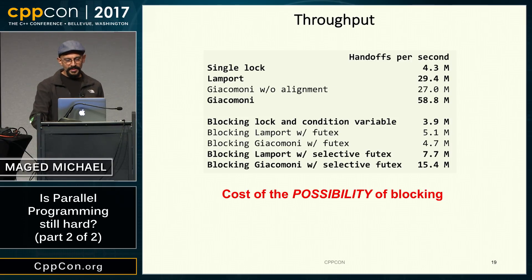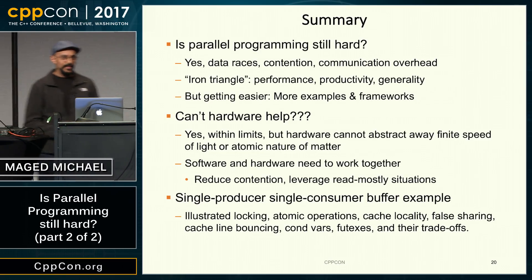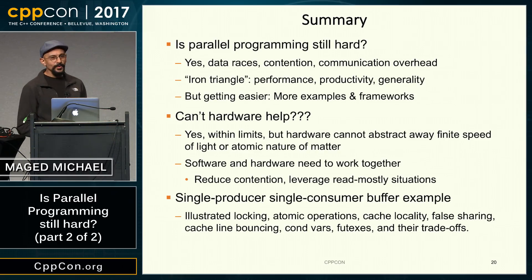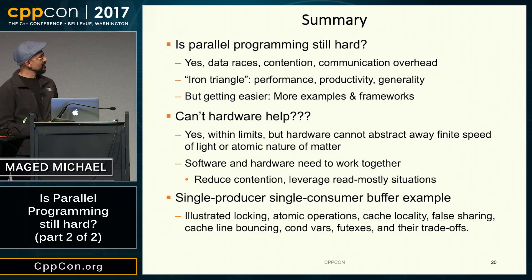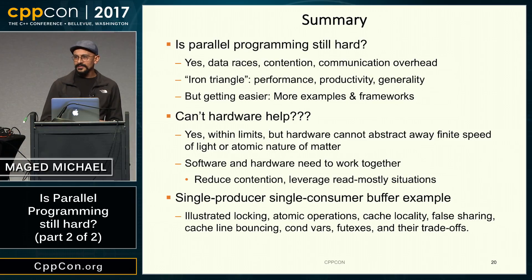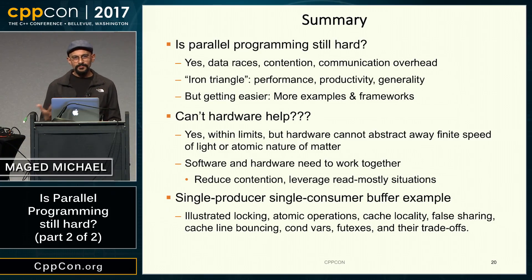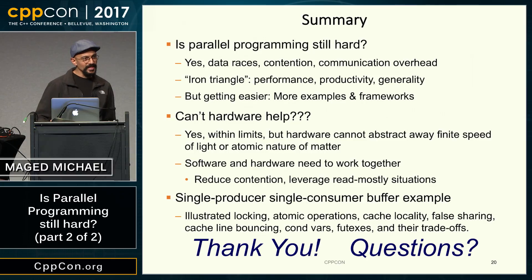To summarize: Michael discussed the landscape of parallel programming and how it is changing and the challenges it presents. Paul discussed the hardware and software issues that remain, how they've improved, and how they interact. And this example demonstrated some of the concepts discussed, showing how trade-offs between generality, complexity, and performance can be worked out. Thank you, and if you have any questions for Paul, Michael, and myself.